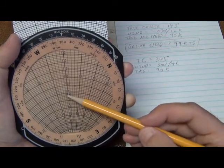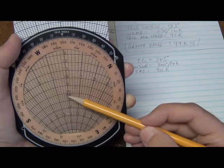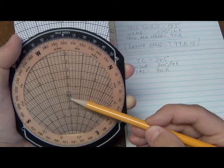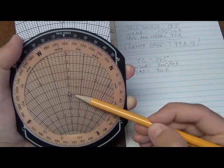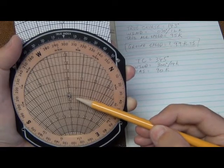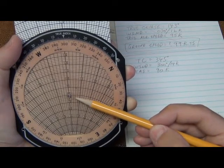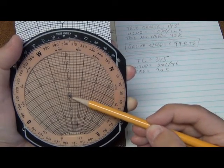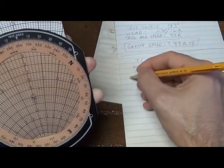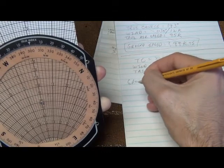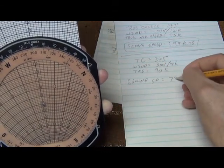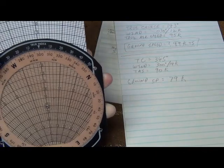To find the ground speed, it is represented by the arc underneath the hole here. I can see the number 80 is peeking out, which represents this dark arc right here. It's somewhere between the 80 arc and the 78 arc, so the answer must be 79 knots. Our ground speed is equal to 79 knots.